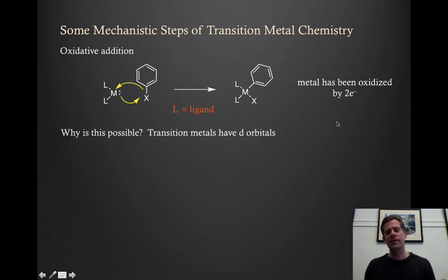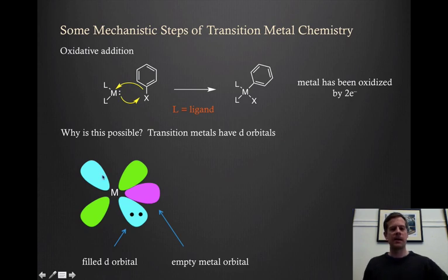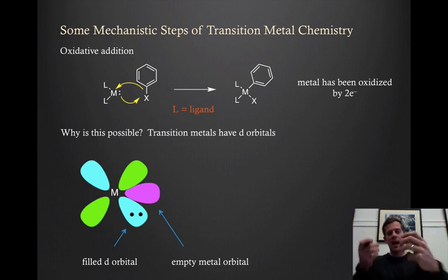Okay, so why is this possible? Why can transition metals do that when we don't see normal organic molecules do this type of thing usually? And the reason is because transition metals have d orbitals that they can use. So if we think about a sort of a stylized transition metal, a transition metal might have a d orbital that might look like this, and if it has a couple of electrons in it, a filled d orbital, that pair of electrons can potentially donate. At the same time, there might be an orbital here that's empty which can accept electrons. So based on the orbital pattern of the transition metal, it can both donate and receive electrons sort of in the same direction.